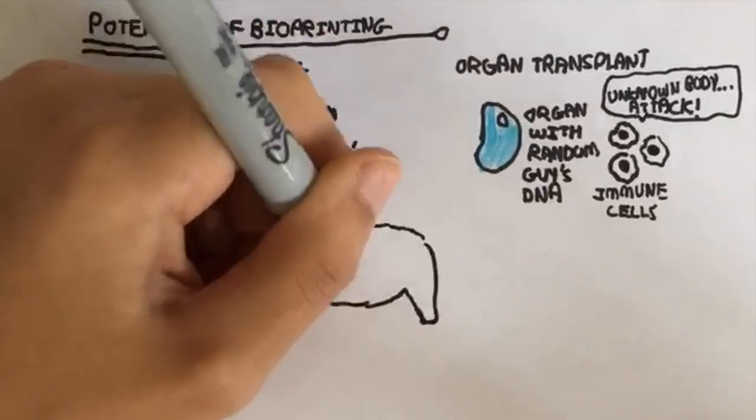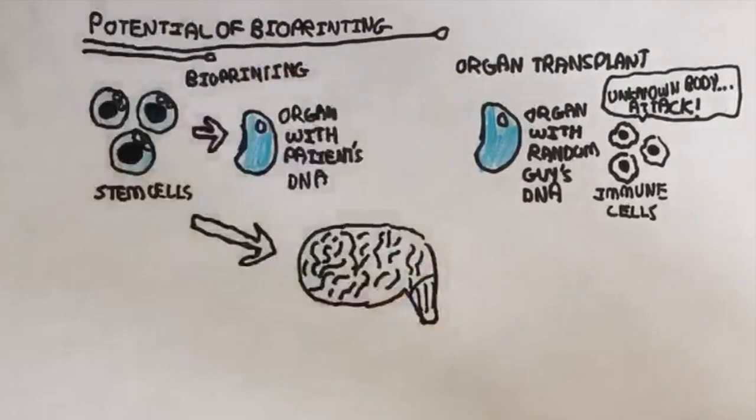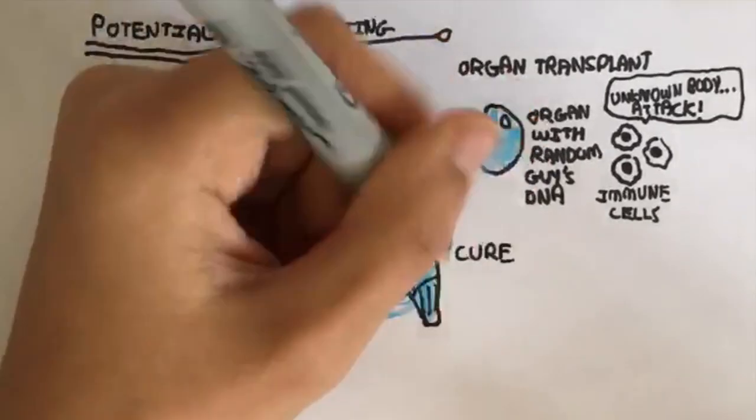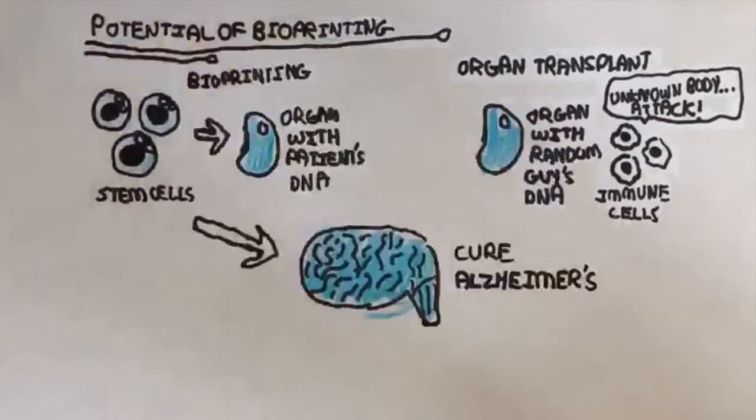In the future, we could grow complete hearts, lungs, and more. Even brains could be healed with embryonic stem cells, treating diseases like Alzheimer's.